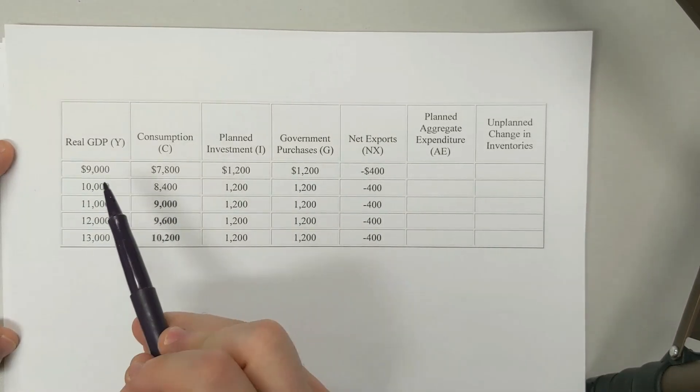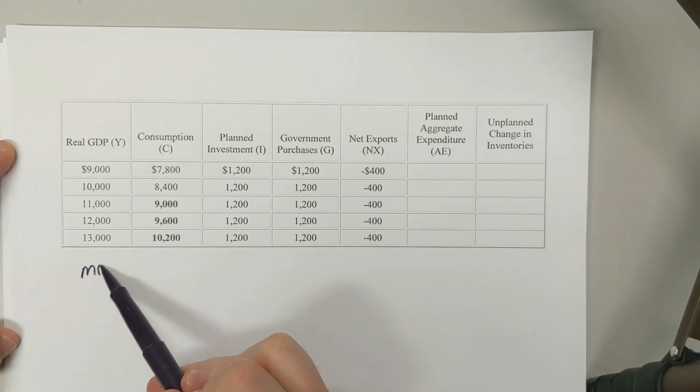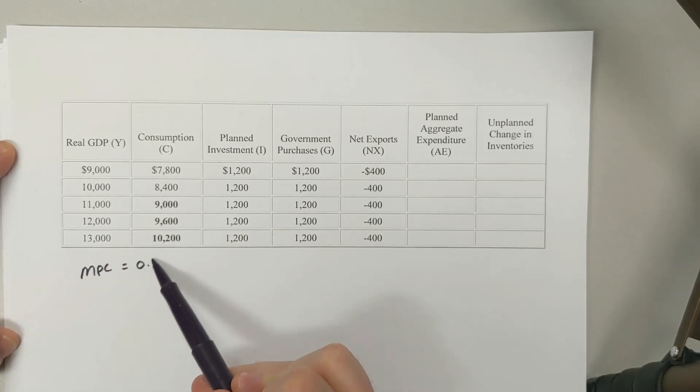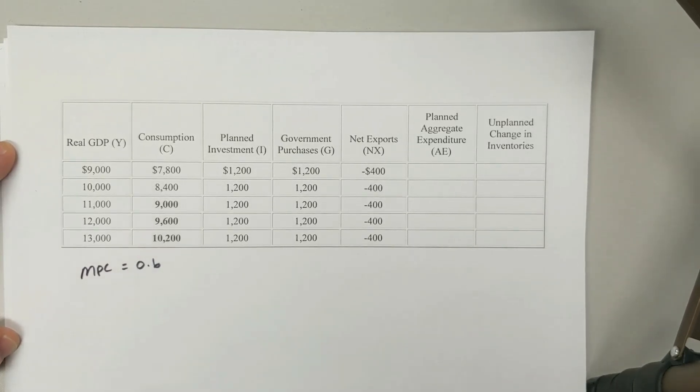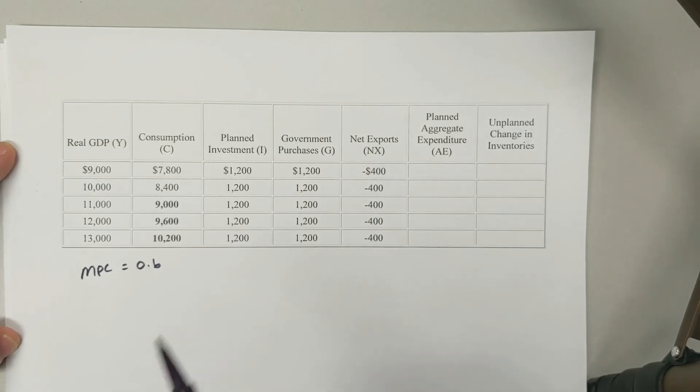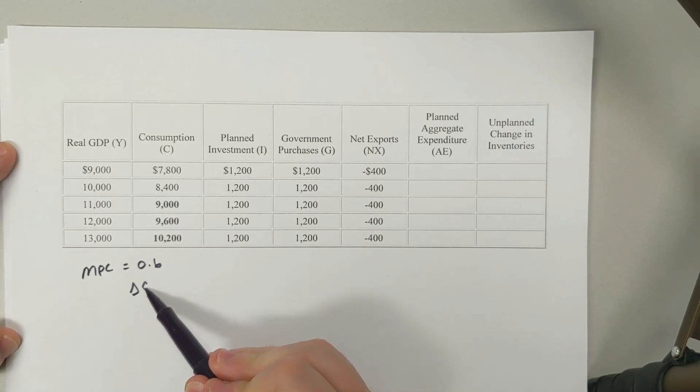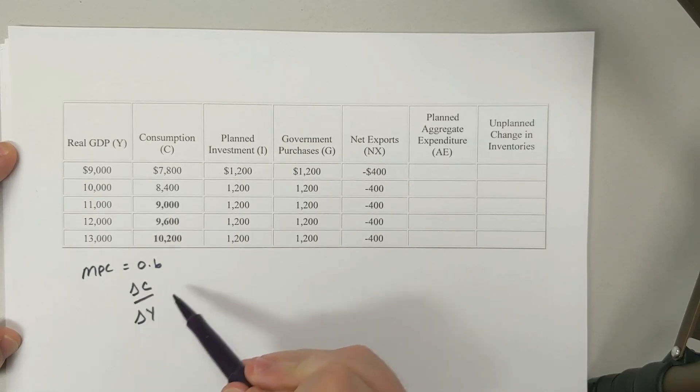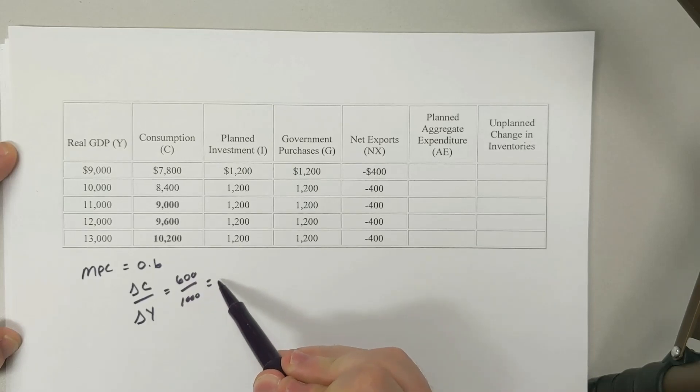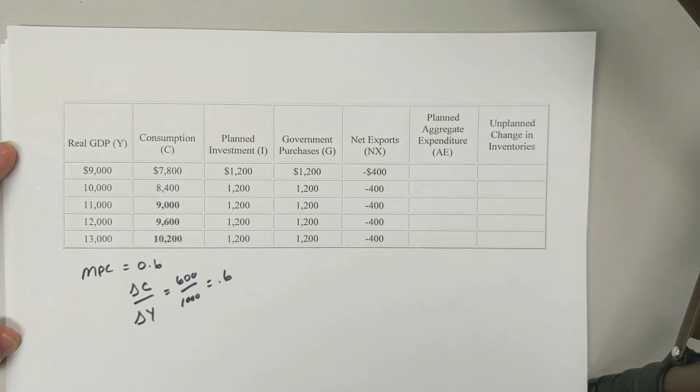We saw that the MPC was equal to 0.6, because for every 1,000 that real GDP was increasing by, consumption was increasing by 600. So my change in consumption divided by my change in GDP was 600 divided by 1,000, and therefore was 0.6. That's how we got that number from before.